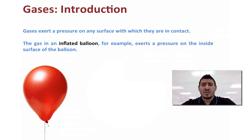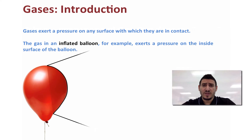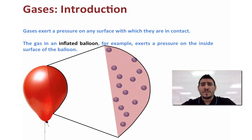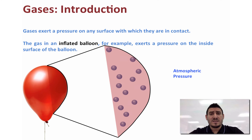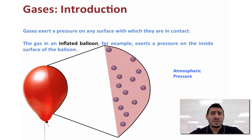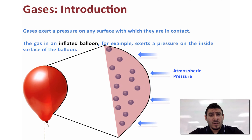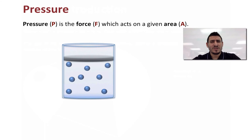Gases will exert a pressure on any surface that they come in contact with. If we consider the example of a balloon filled with air, the air particles will be exerting a pressure on the inside wall of the balloon, and at the same time air will also be exerting pressure on the outside walls. Since the pressure inside and outside are equal, the balloon volume will stay constant. Once one of the pressures changes, the volume of the balloon will change.